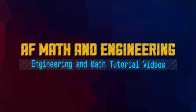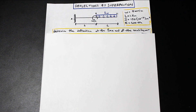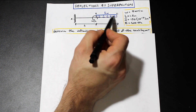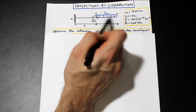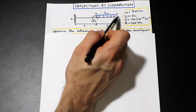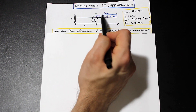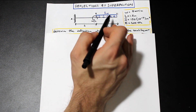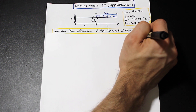Hey everyone, welcome back. Fred here from AdMath Engineering, and this is a video on superposition. This is quite a tricky problem — if you can do this one, you can probably do anything your professor gives you on an exam. The tricky part: we have a distributed load, but it's not across the whole beam, only between B and C. We also have a concentrated moment at a point that's not at the end of the cantilever, so we don't have a direct case for that. The question is in terms of W and L, and we'll solve it that way.